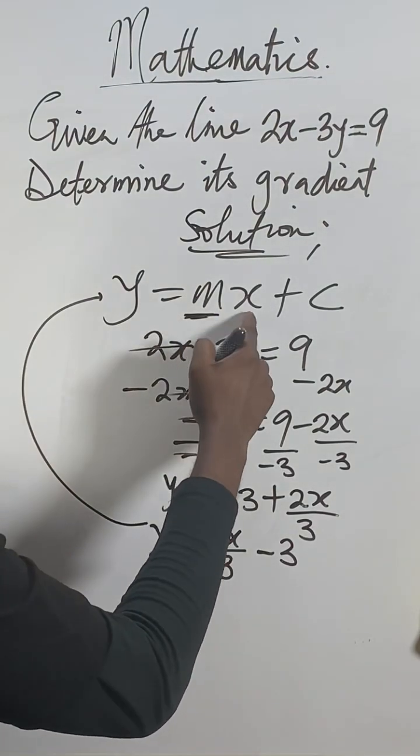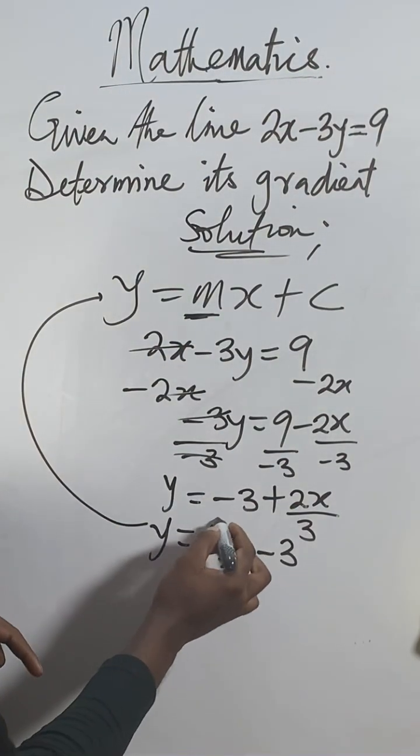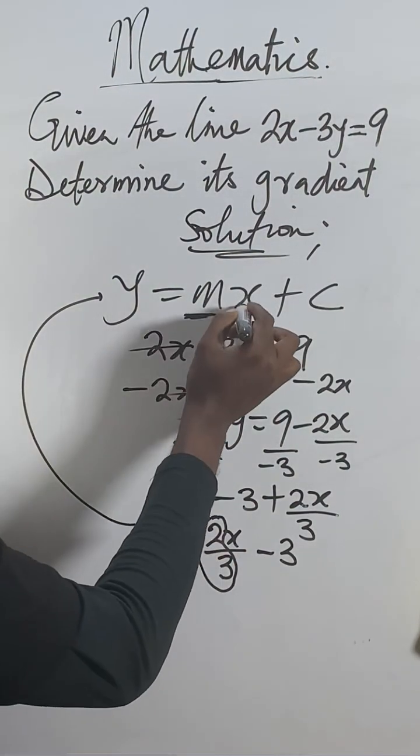The slope now, anything that is the coefficient of this x, the coefficient of this x now is 2 over 3.